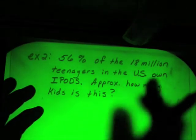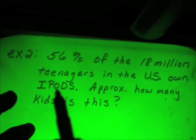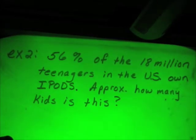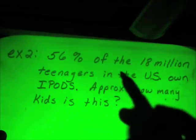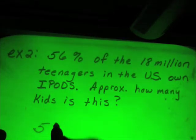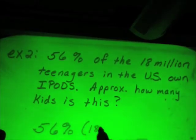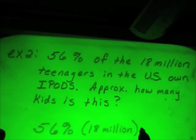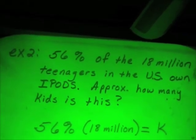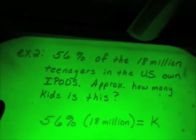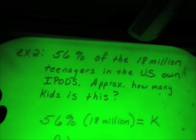So here's some information. 56% of the 18 million teenagers in the United States own iPods. Approximately how many kids is this? So let's approach this. Of means times, is means equals. We got the percentage. We know the amount we're starting with. So it's just going to be 56% of the 18 million. So that's going to be times 18 million is equal to, let's just say, K for kids. I've got to change the 56% to a numerical number here. We're going to get it out of the percent form. So that's going to be 0.56.